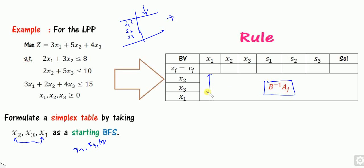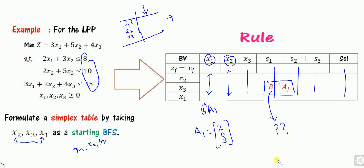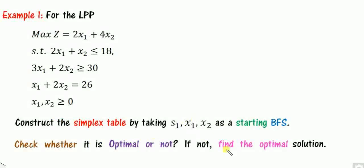What is AJ? The meaning is B inverse of A1, where A1 is the column corresponding to X1. Similarly, for the second column, you find B inverse of A2, where A2 is the column corresponding to X2. For example, what is A1 in this example? It is the column corresponding to X1, which is 2, 0, 3. Similarly, there are columns corresponding to X2, X3, S1, S2, S3, and the right-hand side. The only task is to find the value of B inverse, and we will discuss three different examples.